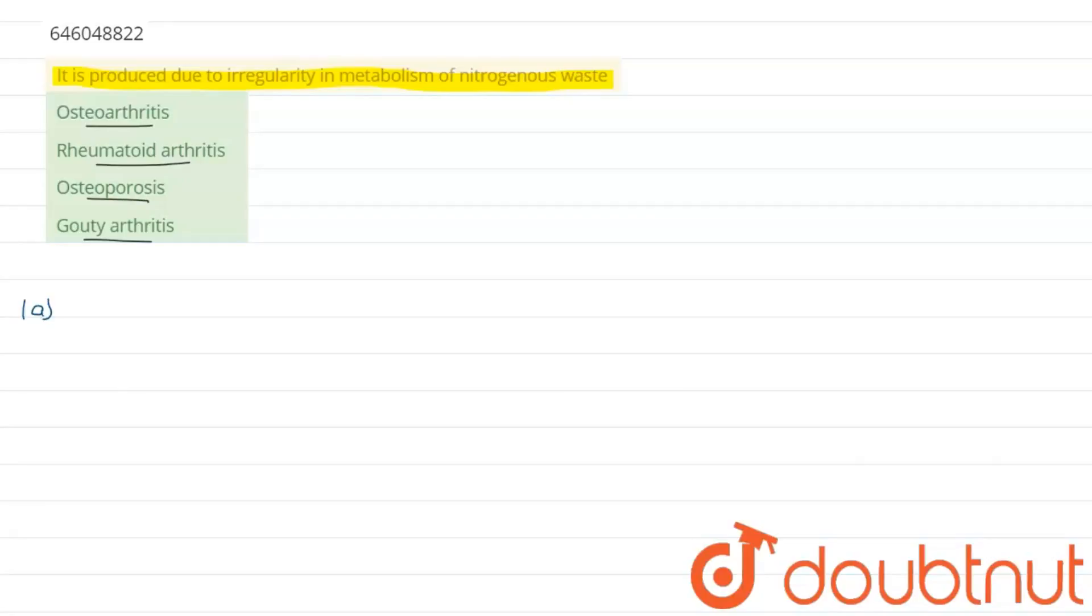Talking about osteoarthritis first, it is caused basically due to an injury or obesity, and not due to metabolism of nitrogenous waste, so this option is wrong. Coming to the second option, which is rheumatoid arthritis.